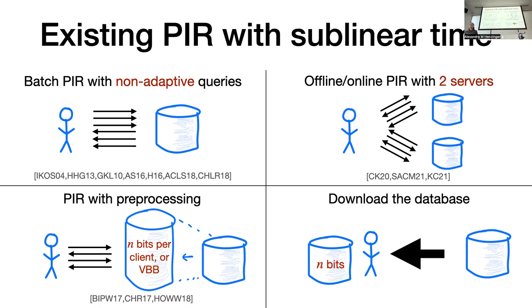Unfortunately, each of these prior approaches comes with limitations that make them cumbersome to deploy in practice. Batch PIR requires the client to make its queries non-adaptively rather than slowly over time. Offline-online PIR requires the client to communicate with two non-colluding servers, which in practice requires careful coordination between multiple business entities, since security comes from the adversary not being able to corrupt both servers rather than from cryptographic assumptions. Known approaches to PIR with preprocessing in the single-server setting require the server to produce an encoding of roughly N bits per client, or they require virtual black-box obfuscation. And if the client downloads the database, it needs to store the whole database, which is impractical for large databases that are gigabytes or even terabytes in size.